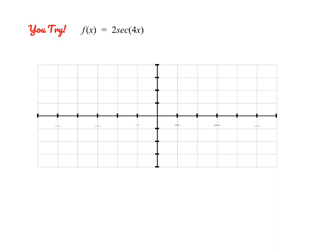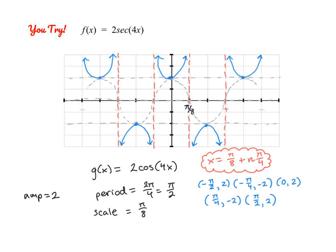Go ahead and pause the video and try that one. Now let's check our answer. We start by graphing 2 cosine of 4x. This graph has a period of π/2 — that's 2π divided by 4 — so I scaled the graph every π/8, splitting the period into four parts. The amplitude is 2, so instead of starting at (0, 1), I start at (0, 2). Anytime cosine equals 0, I draw an asymptote, so asymptotes occur at x equals π/8 plus n(π/4), reoccurring every π/4 units. Then find your hills and valleys and draw in your parabolas.